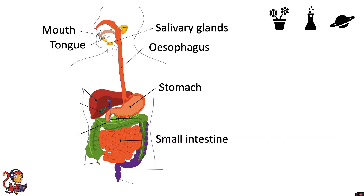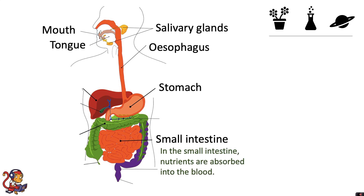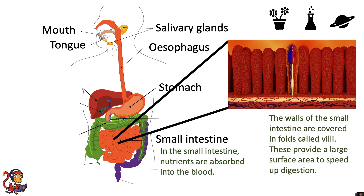The food then passes into the small intestine. In the small intestine nutrients are absorbed into the blood. The walls of the small intestine are covered in folds called villi, which provide a large surface area to speed up digestion.